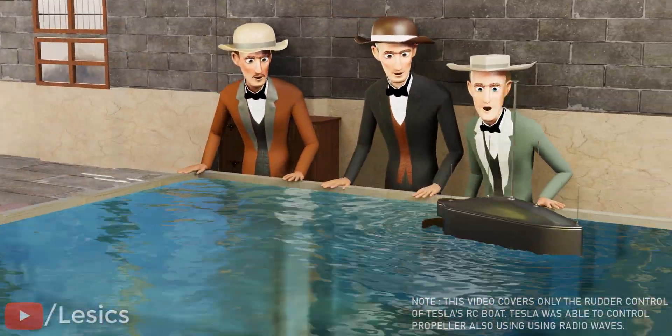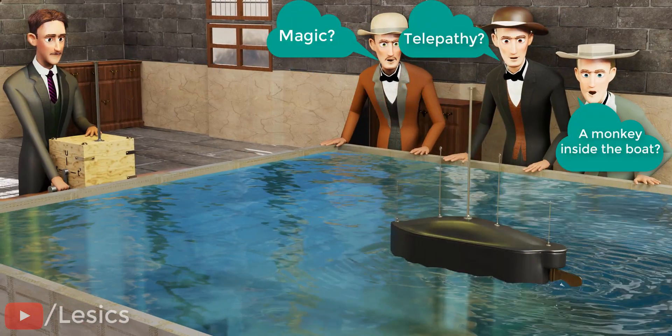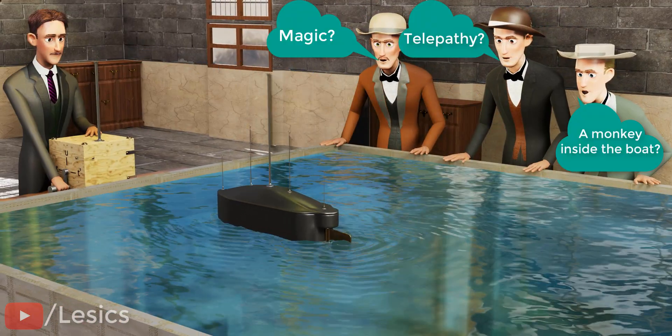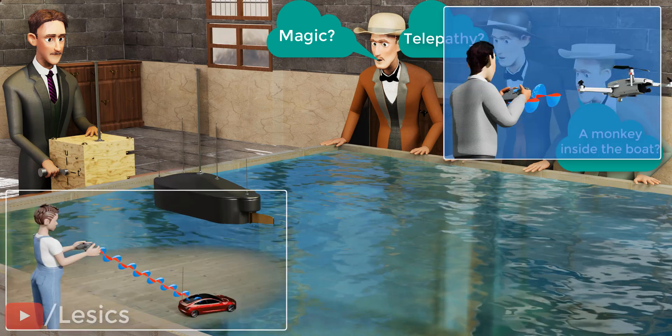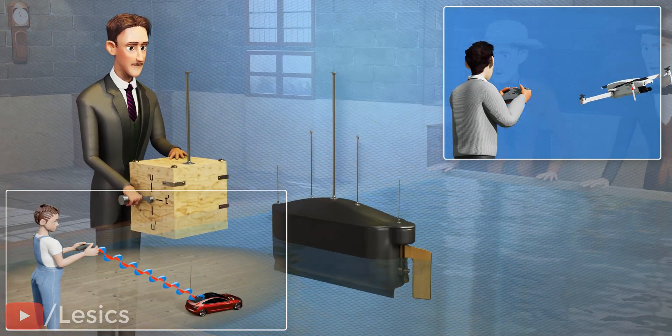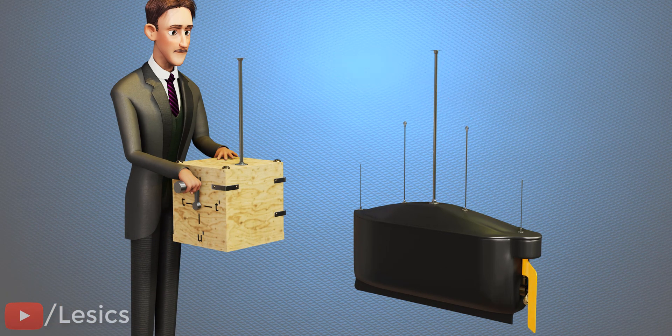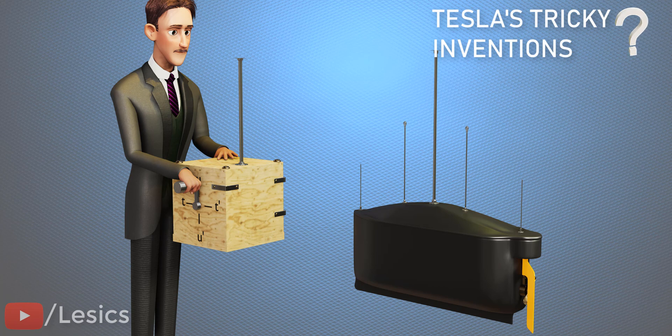The crowd was witnessing something like this for the first time. They thought Tesla was controlling the boat using magic or telepathy. An advanced version of this technology is something we all use in our daily lives. Welcome to a design journey in which we will understand Nikola Tesla's cool and tricky inventions in a simple way.